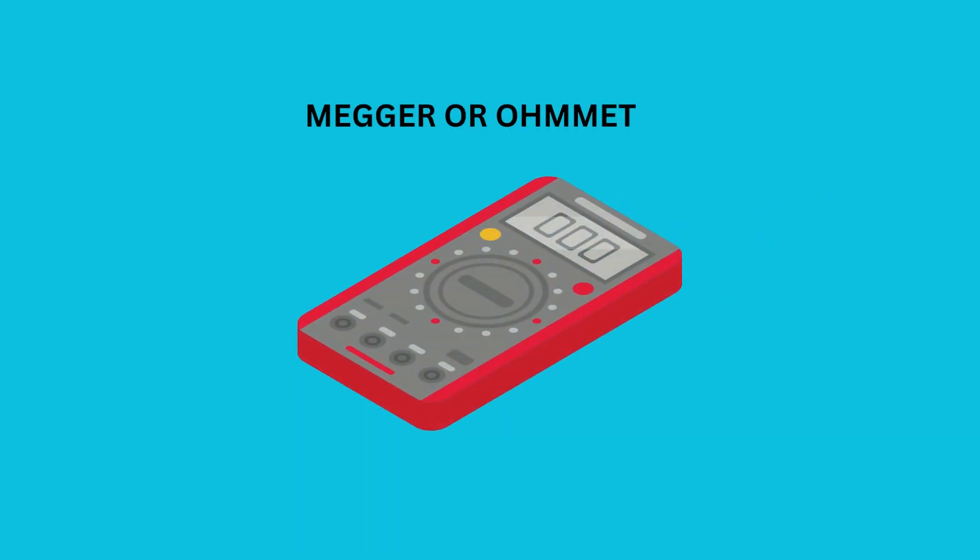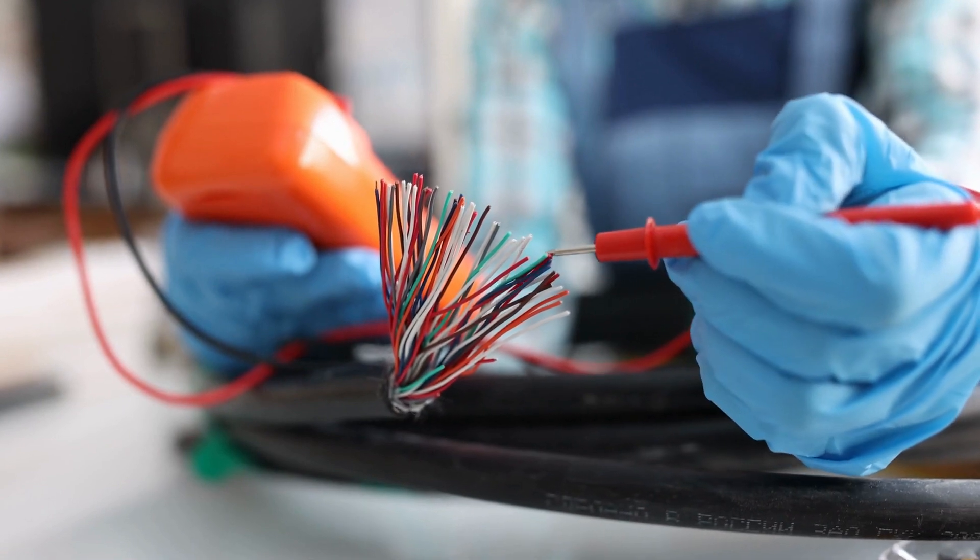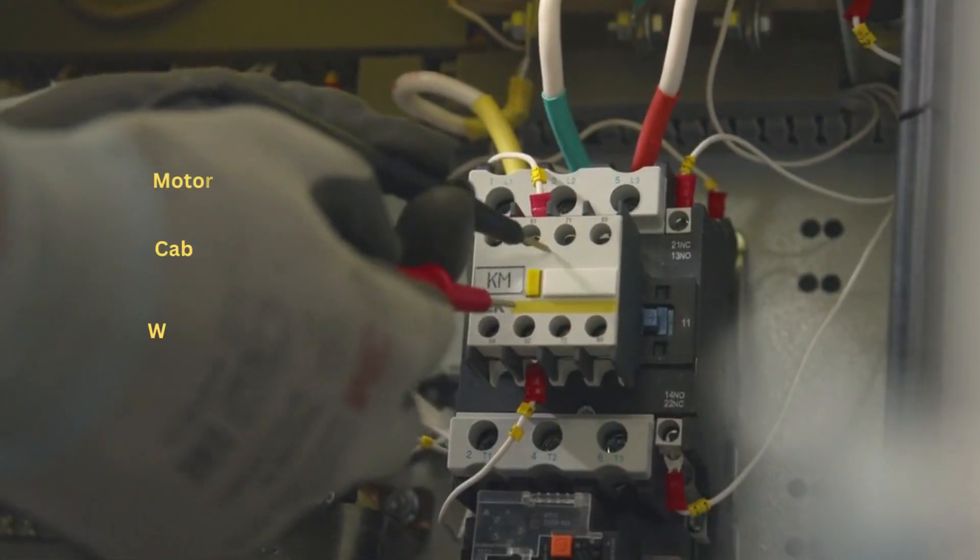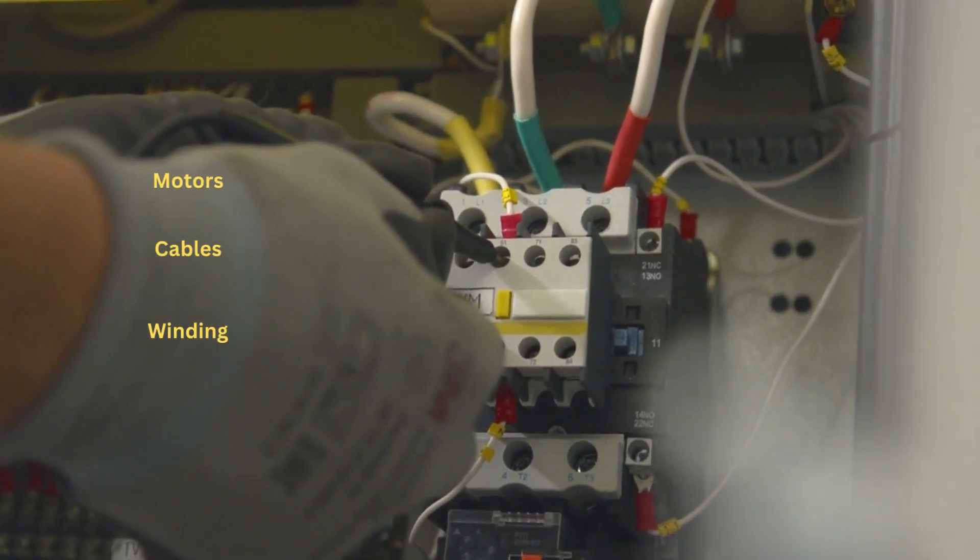In today's video, we are going to talk about Megger, which is a device used for measuring electrical leakage in wires and verifying the electrical insulation levels of any device, such as motors, cables, and generator windings.